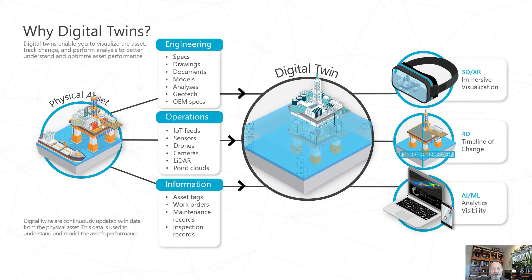A digital twin also incorporates different types of data — whether it's data from drawing specifications, documents, analytical models, photos, reality meshes, sensor feed data, or asset management data. But to really realize the potential of a digital twin, there needs to be a standardized framework to efficiently connect the different information systems. Bentley has such an open, scalable cloud platform which users can build on.